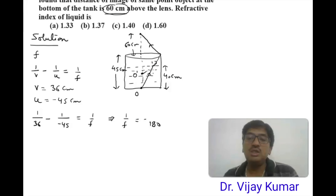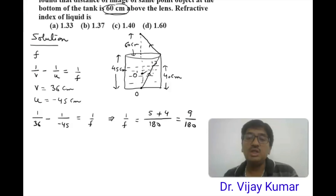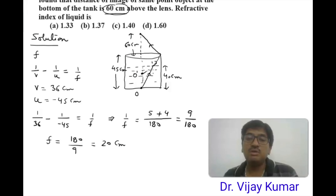Solving: 1/f = 1/36 + 1/45. Taking LCM of 180: that gives 5/180 + 4/180 = 9/180, so f = 180/9 = 20 centimeters. The focal length of the convex lens is 20 centimeters.